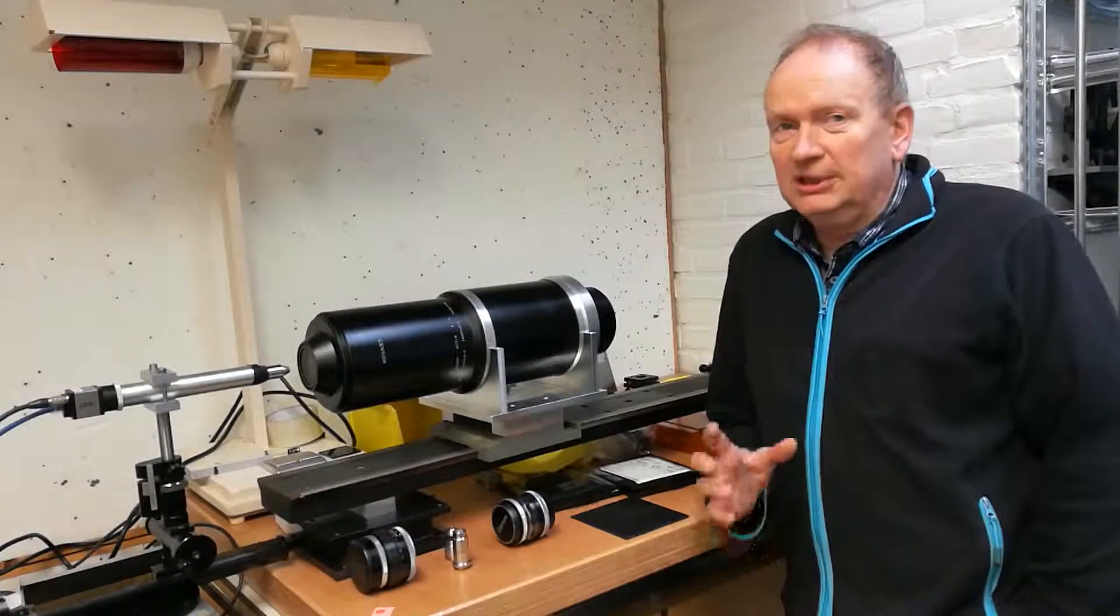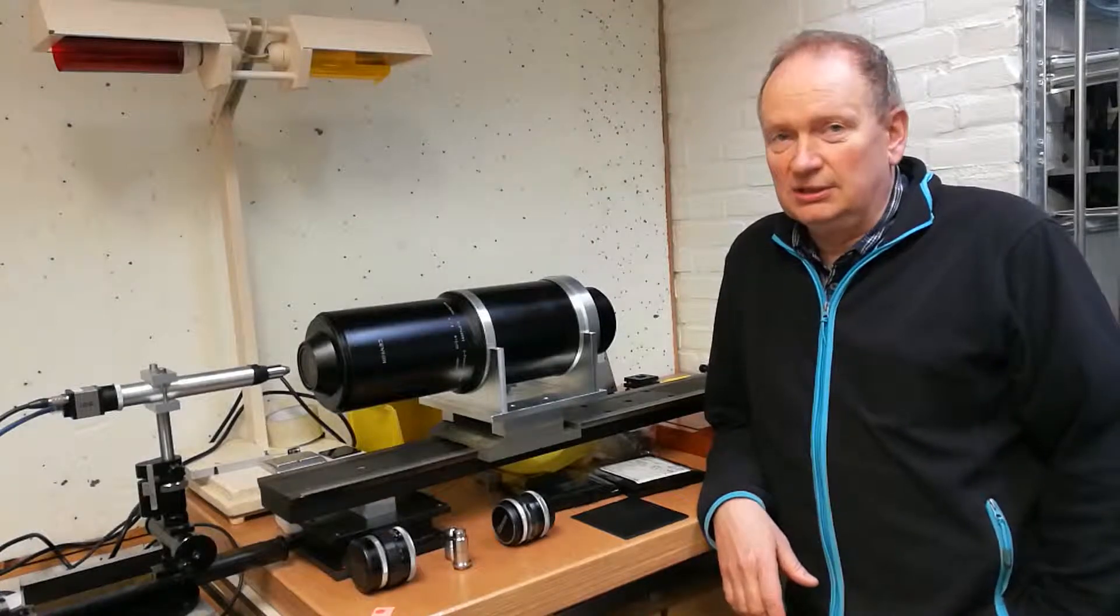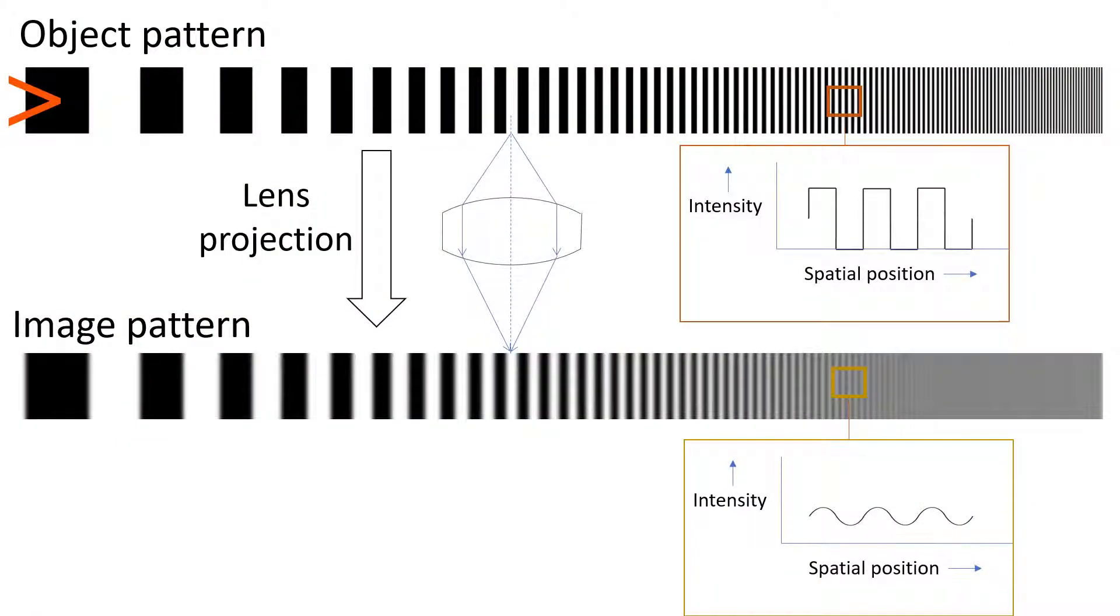But first a little bit of theory on the resolution of lenses. What do we exactly mean with lens resolution? Well, it is the ability of a lens to accurately reproduce features from a certain size, from the object to the projection image. So let's take an example.